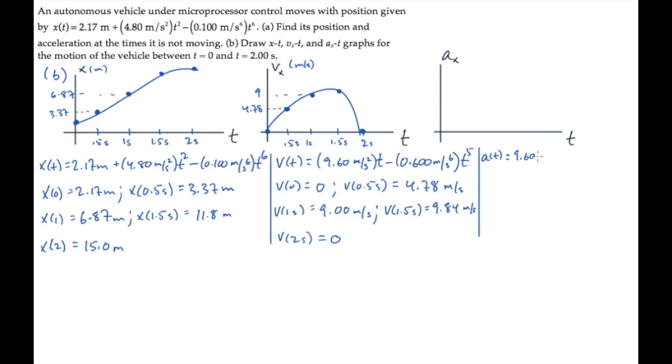Do the acceleration in the same way. Take the derivative of the velocity to find the acceleration equation. It's 9.60 meters per second squared, minus 5 times 0.6, which is 3, t to the fourth now.